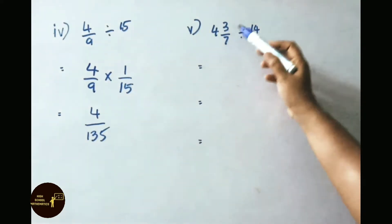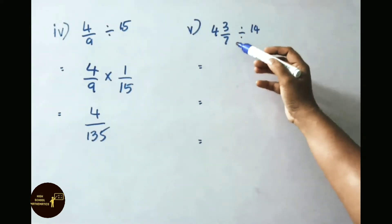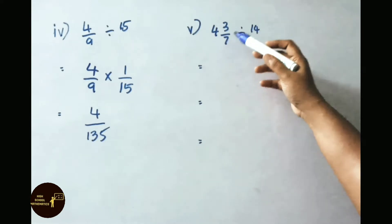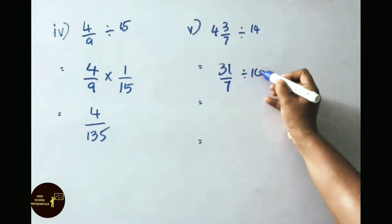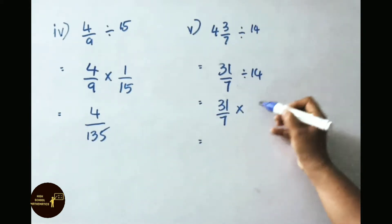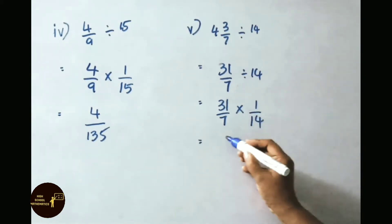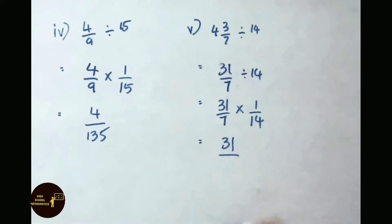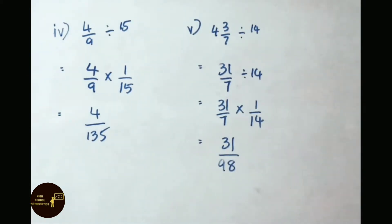See the fifth sum now: 4 and 3 by 7 divided by 14. Convert to improper fraction: 7 fours are 28, plus 3 is 31 by 7, divided by 14. Next step: 31 by 7 into the reciprocal of 14, which is 1 by 14. Multiply the numerators: 31 into 1 is 31. Multiply the denominators: 7 into 14 is 98. So the answer is 31 by 98.